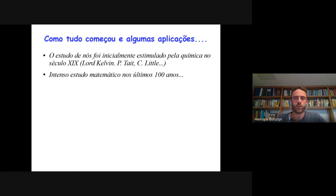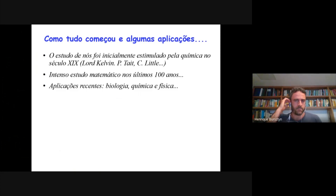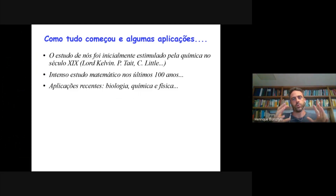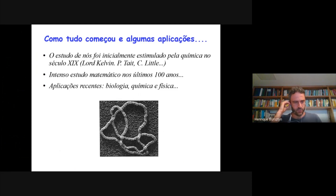Esse cenário começou a mudar por volta de 1980 — anos 80 do século XX, portanto 100 anos depois — quando biólogos, químicos e físicos voltaram a ter interesse em nós por diversos motivos. Por exemplo, na biologia, nós aparecem no estudo de células e DNAs. O DNA sabe-se hoje que ele fica enroladinho, ele se acomoda no núcleo celular como se fosse um nó, e o entendimento desse nó te dá informação sobre o processo de replicação de células. Os matemáticos, na verdade, nunca tinham abandonado esse estudo.